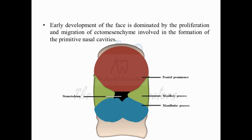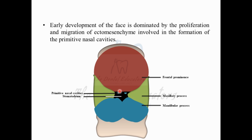If you look at the early development of the face, it is dominated by the proliferation of the ectomesenchymal and neural crest cells, which help in the formation of the primitive nasal cavity. As you can see, these blue structures are the primitive nasal cavities, developing below the future forehead area and above the future oral cavity — just above the stomodium — due to migration of the ectomesenchymal and neural crest cells.